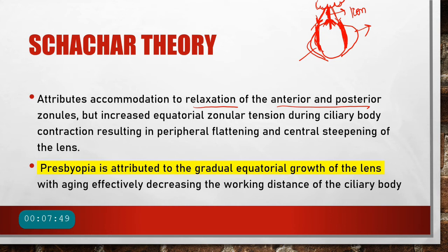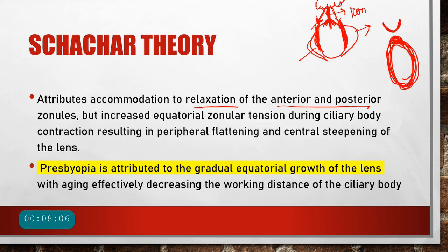This theory explains presbyopia by stating that with time the equatorial diameter of the lens becomes larger due to deposition of abnormal protein. The distance between the ciliary body and the lens decreases, the zonules become more relaxed, and no amount of ciliary body contraction can cause tightening of the central zonules or relaxation of the anterior and posterior zonules. However, this theory is not very well accepted.